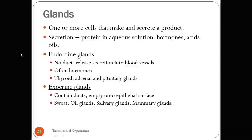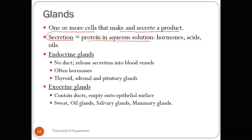Next are glands. There are two types of epithelium: covering and lining, and glandular epithelium. Glands are one or more cells that make and secrete a product. Secretion by glands can be proteins in aqueous solution, hormones, acids, or oils. Endocrine glands have no duct — they do not have a pipeline to carry secretions to a surface.